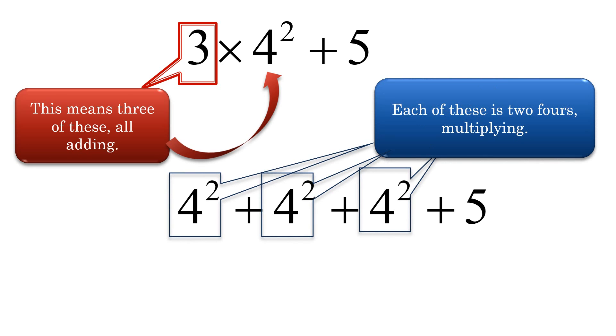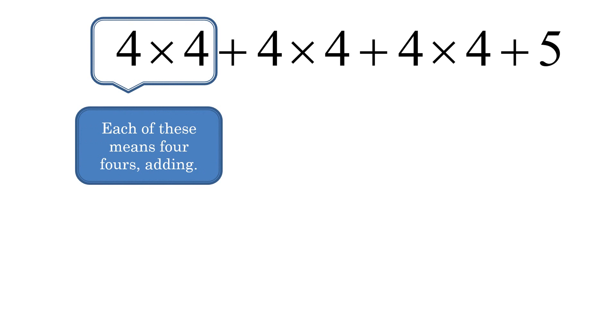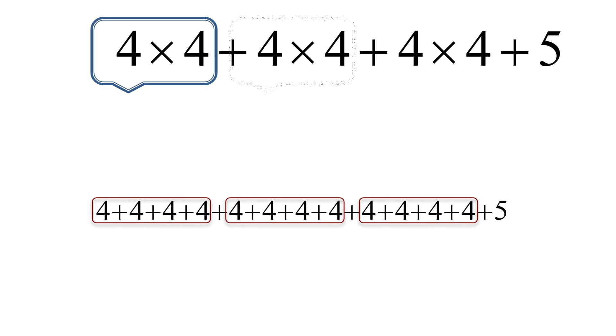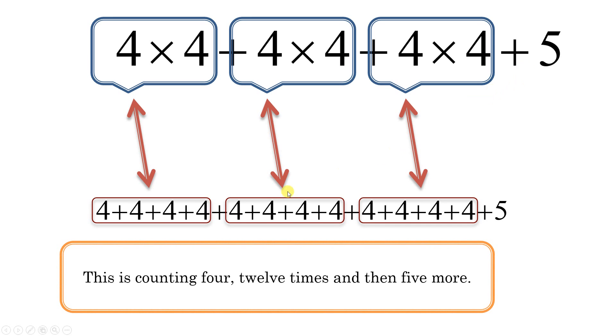But, I'm going to consider that 3 times 4 squared means that there are 3 four-squares all adding together like this. And then, of course, the 5 at the end. Now, each of those 4 squared is 4 times 4. So, I've got 4 times 4 plus 4 times 4 plus 4 times 4, and then plus 5. Each of these 4 times 4s means, again, I have 4 fours all adding together. And we saw a minute ago that really equals 16, right? But each of those 4 times 4s means 4 plus 4 plus 4 plus 4. Do you see how if we address the exponent as repeated multiplication, which is the same as repeated addition, and addition is repeated counting? Well, we get the same result.